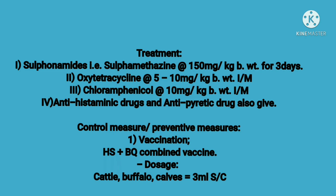Dexamethasone injection, which is anti-inflammatory and metabolic, at the rate of 0.05 mg per kg body weight — 10 ml IM for large animals and 3 to 5 ml IM for small animals. Antihistamine injection (anti-allergy) at the rate of 0.1 mg per kg body weight — 5 ml IM for large animals and 1 to 2 ml IM for small animals. Dextrose saline 5% or 20% at the rate of 1 to 2 liters for large animals IV once daily.